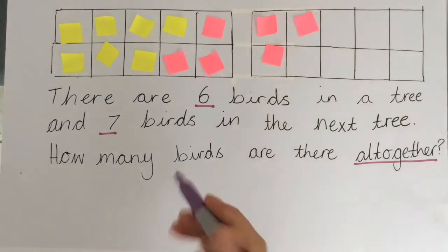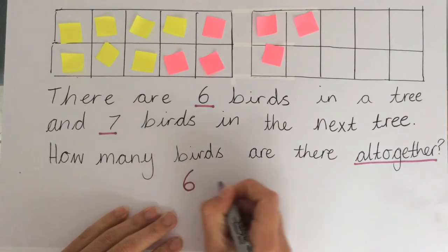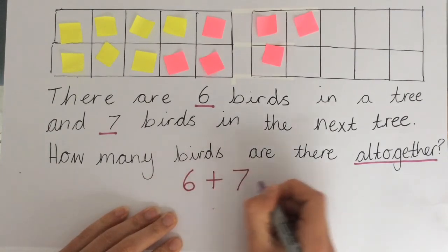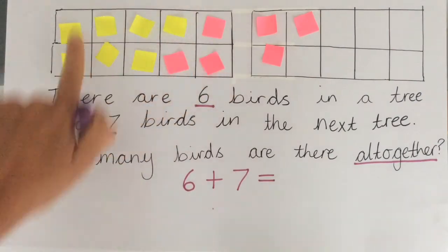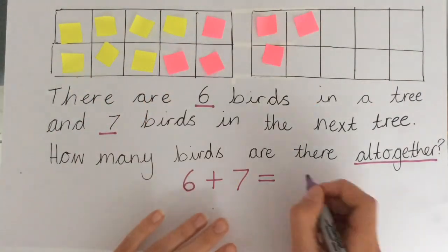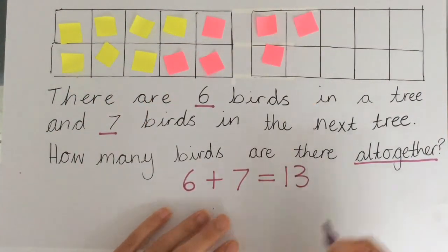Then what we've got to do is count them all together. So again, I can see one ten frame is full and then we need to count the rest. So ten, eleven, twelve, thirteen. Six add seven is thirteen.